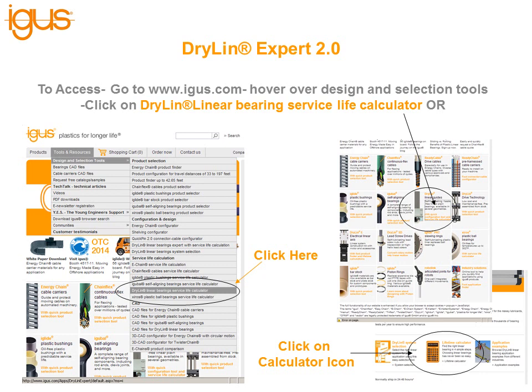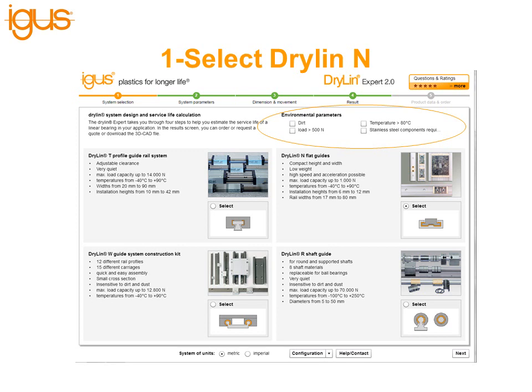You can find the expert system in two locations. Put your mouse over Tools and Resources, move down to Design and Selection Tools, and click on Dryland Linear Bearing Service Life Calculator. You can also find the calculator by going to igus.com and clicking on the picture of the Dryland linear rails, then clicking on the calculator icon — that will bring you to the Dryland Expert System.